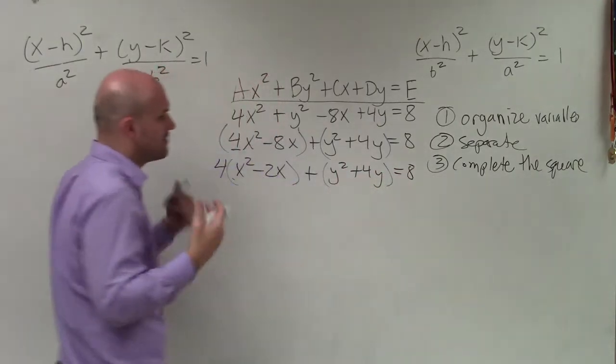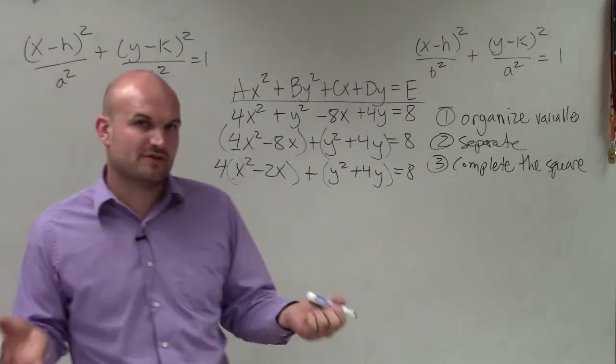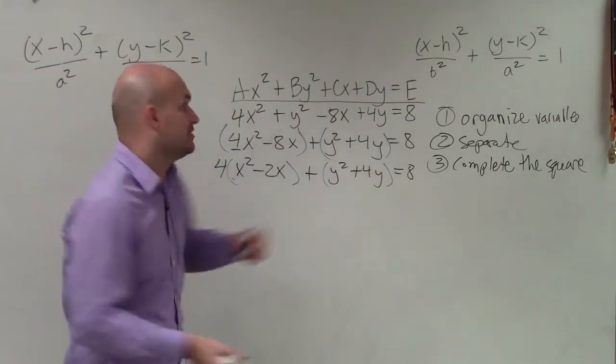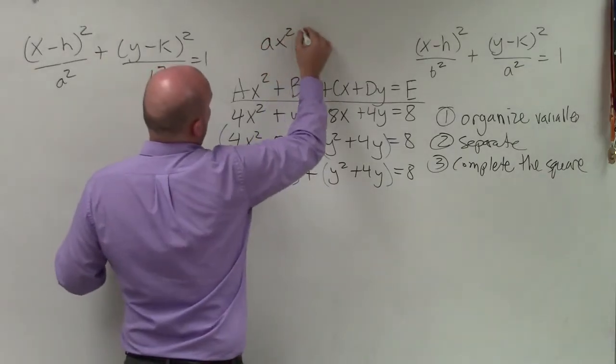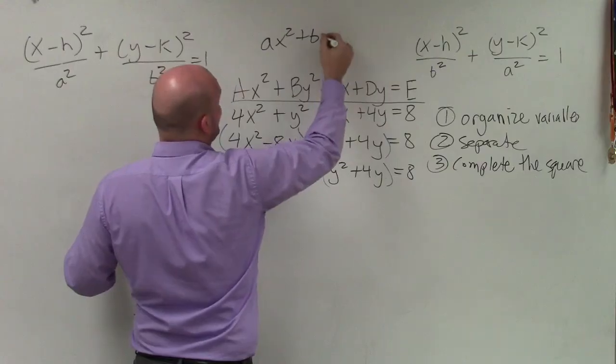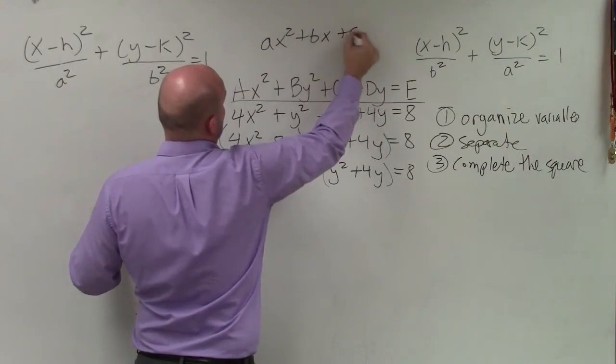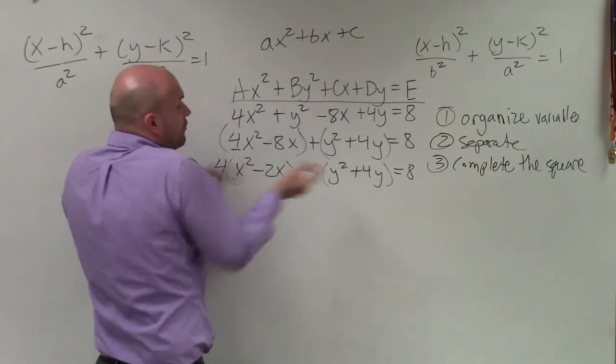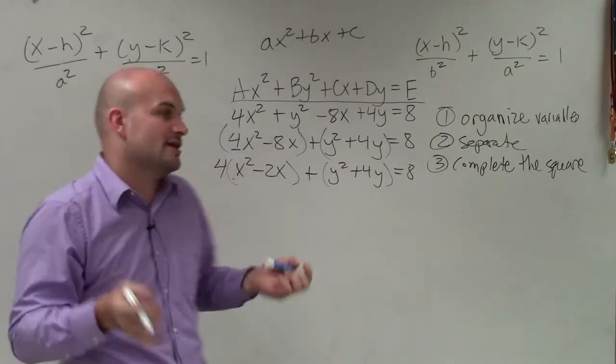All right, so this fact of creating this value that's going to create a perfect square trinomial, right? These aren't trinomials. They don't have the value of c. Remember, a perfect square trinomial quadratic would be ax² + bx + c. We don't know the value of c. We want to create a value of c that's going to make this a perfect square trinomial.